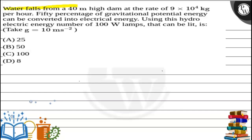Water falls from a 40 meter high dam at a rate of 9×10^4 kg per hour. 50% of the gravitational potential energy can be converted into electrical energy. Using this hydroelectric energy, the number of 100 watt lamps that can be lit is what we have to find.